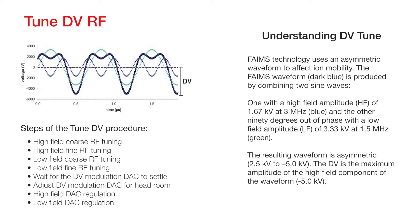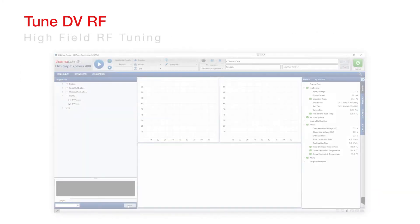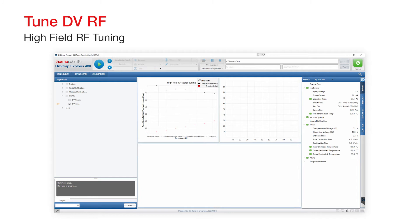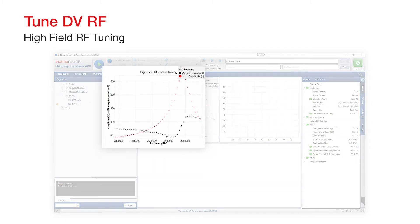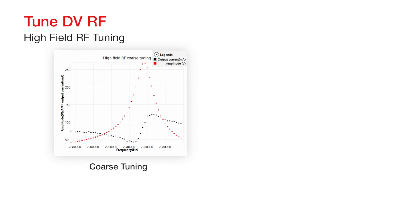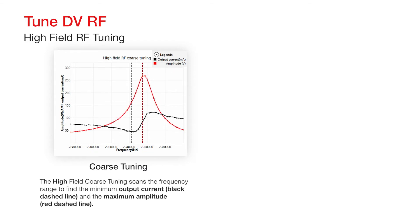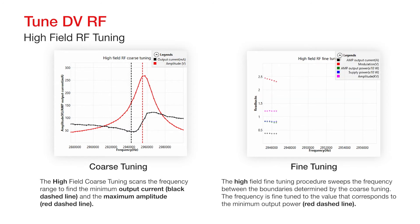The DV is the maximum amplitude of the high-field component of the waveform. Every RF circuit has an ideal resonance that doesn't waste power. High-field RF tuning determines the high-field frequency that corresponds to the minimum output power. The high-field coarse tuning scans the frequency range to find the minimum output current, shown here as the black dashed line, and the maximum amplitude, shown as the red dashed line. The high-field fine-tuning procedure sweeps the frequency between the boundaries determined by the coarse tuning. The frequency is fine-tuned to the value that corresponds to the minimum output power, shown here as the red dashed line.